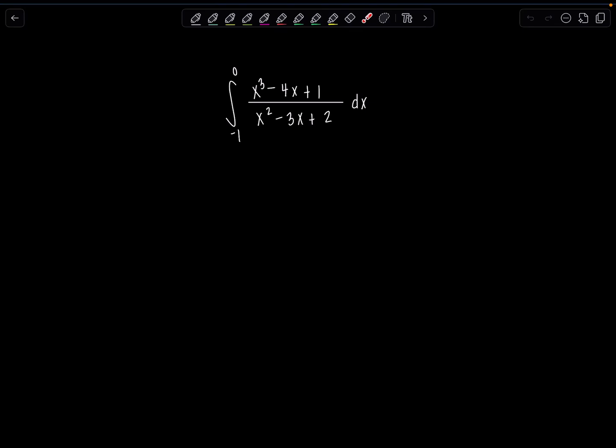Welcome to Math with Professor V. Here is your latest integral of the day. We've got a definite integral from negative 1 to 0 of x cubed minus 4x plus 1 over x squared minus 3x plus 2 dx. If you want to pause the video and try it on your own, feel free. It's pretty straightforward.